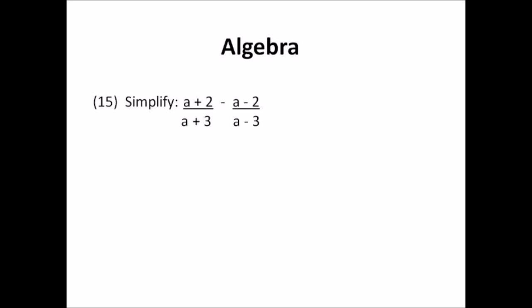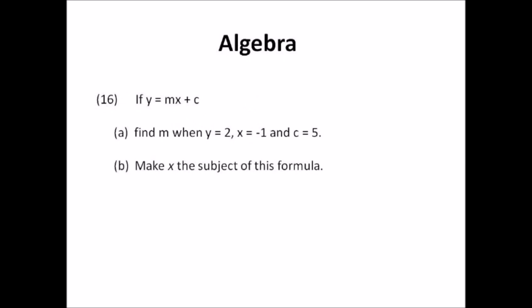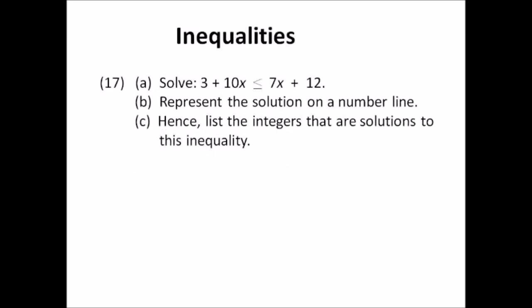Number sixteen: algebra. If y equals mx plus c, a) find m when y equals 2, x equals negative 1, and c equals 5. Put your values in, make m the subject, and find the number. Be careful with the negative 1. Then b) make x the subject of the formula — rearrange so x is at the front, giving a final equation for x.